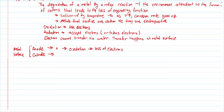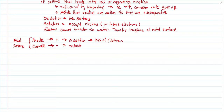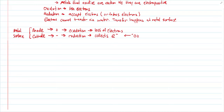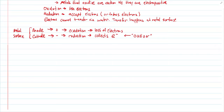The cathode accepts electrons — negative charges — creating a negative charge site on the metal surface. The cathode is associated with reduction and collects electrons. Sometimes the cathode is called the oxidizer: whatever is reducing is called the oxidizer. They're analogous to each other, and I'll give some examples of that in a bit.